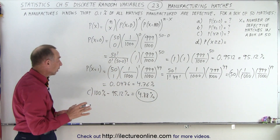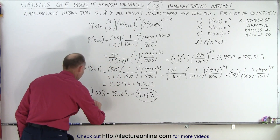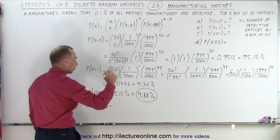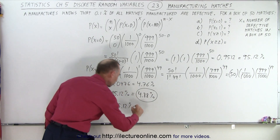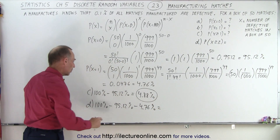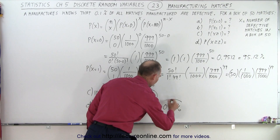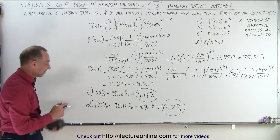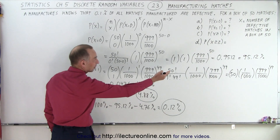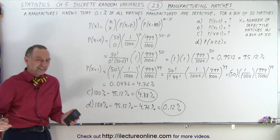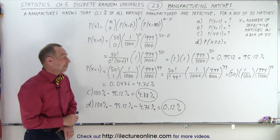For two or more defective matches, we take 100% and subtract the probability of zero defective — 95.12% — and also subtract the probability of one defective — 4.76%. That gives 99.88%, so the remainder is 0.12% chance of two or more defective matches in a box of 50. That's probably acceptable: there's only about a 5% chance of one or more defective, and only 0.12% for two or more.